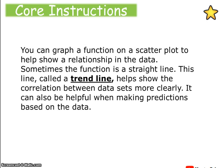You can graph a function on a scatter plot to show a relationship in the data. Sometimes this function is a straight line called a trend line. It helps show the correlation between data sets more clearly and can be helpful when making predictions based on the data.